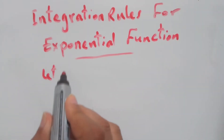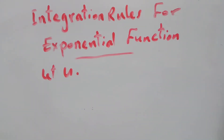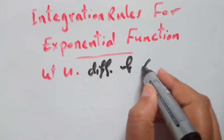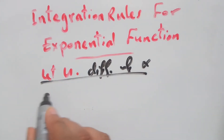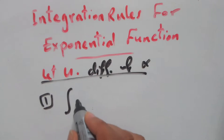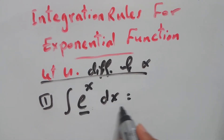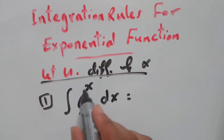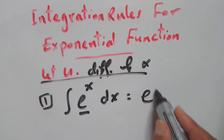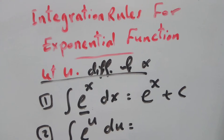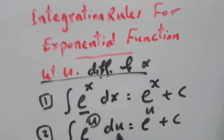Let u be a differentiable function of x. Rule 1: the integral of e to the power x with respect to x equals e to the power x itself plus c. Rule 2: the integral of e to the power u with respect to u equals e to the power u itself plus c, where u is a function of x.